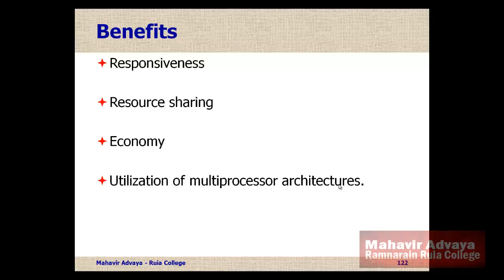The second benefit is Resource Sharing. As threads are part of the same process, they share the memory and resources of the process to which they belong. This allows the benefit of code sharing for an application — different threads may execute different activities for an application in the same address space. The third benefit is Economy. As every thread executes within the process it belongs to, threads do not need to be allocated new memory space or resources, reducing resource utilization of the operating system. There is also no need for context switching between processes.